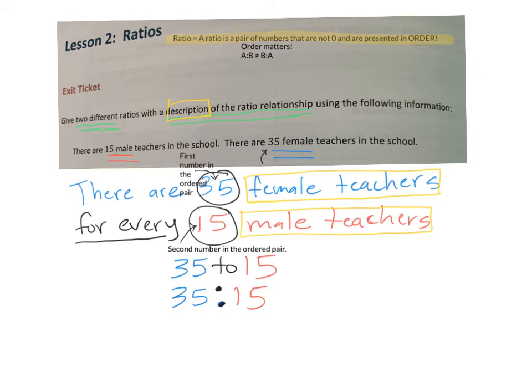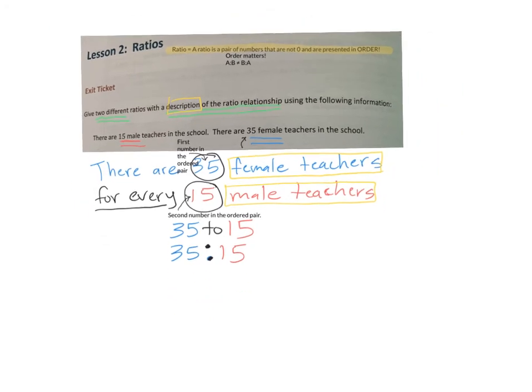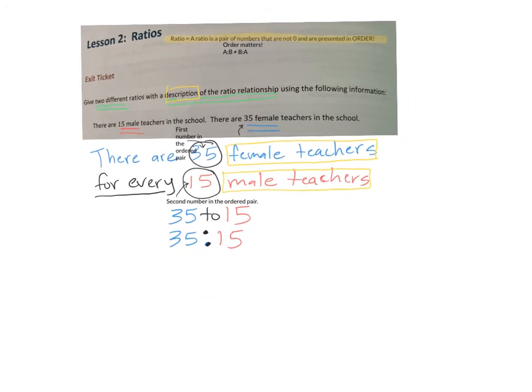Now, they don't want you to stop there because they have asked that you do give two different ratios. So this is one ratio, and we remember that when we write ratios, order absolutely matters.